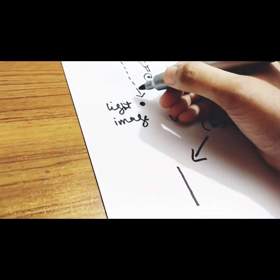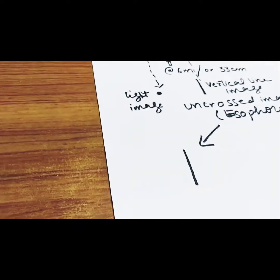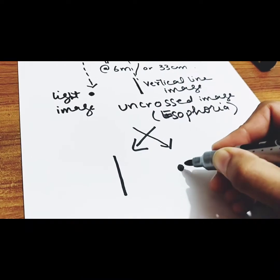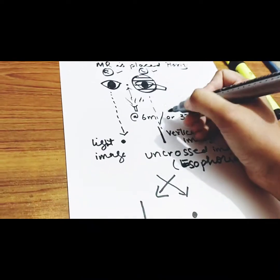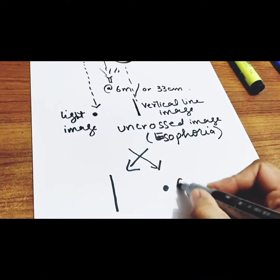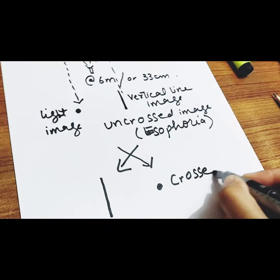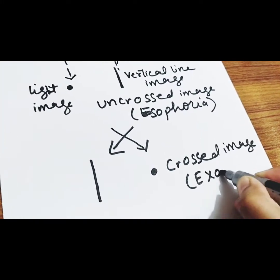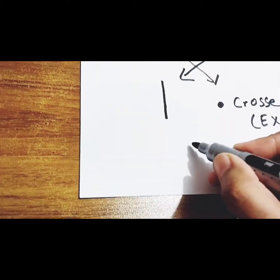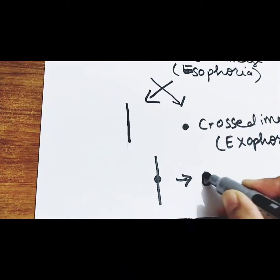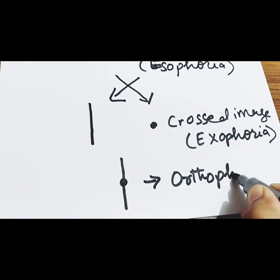If the line image and light image are seen in opposite directions in a crossed way, this image is called a crossed image and the deviation is exophoria. If the line image and light image are superimposed, then this is an orthophoric condition.